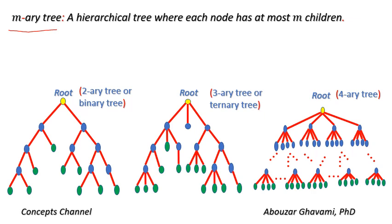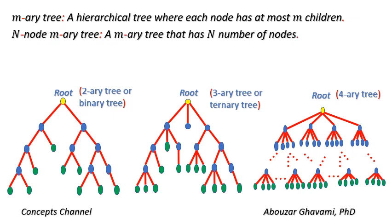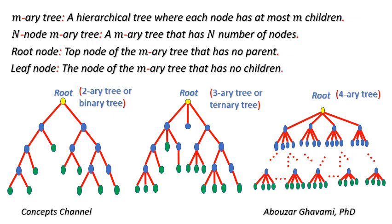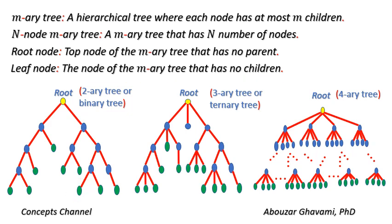An m-ary tree is a hierarchical tree where each node has at most m children. An n-node m-ary tree is an m-ary tree that has n number of nodes. The root node is the top node of the m-ary tree that has no parent. A leaf node is the node of the m-ary tree that has no children.